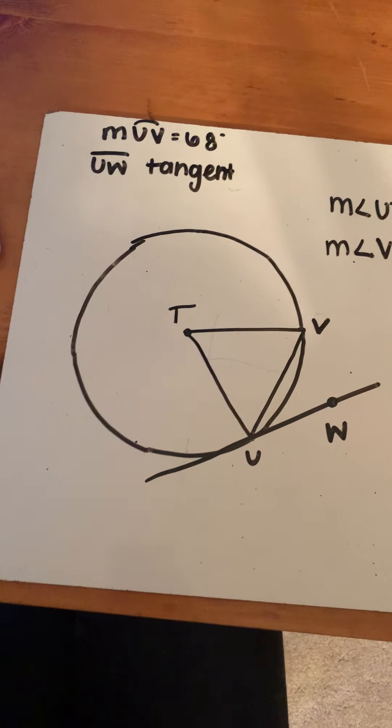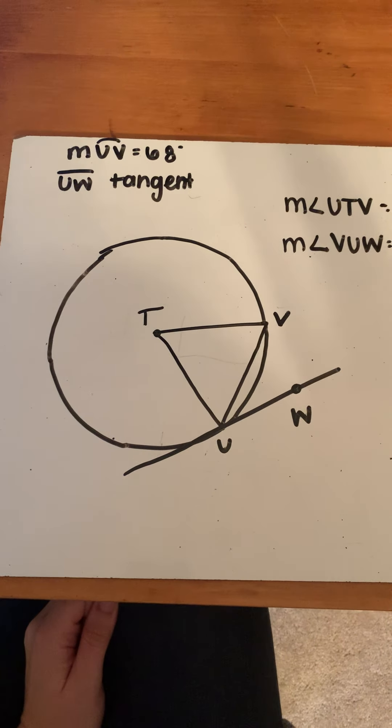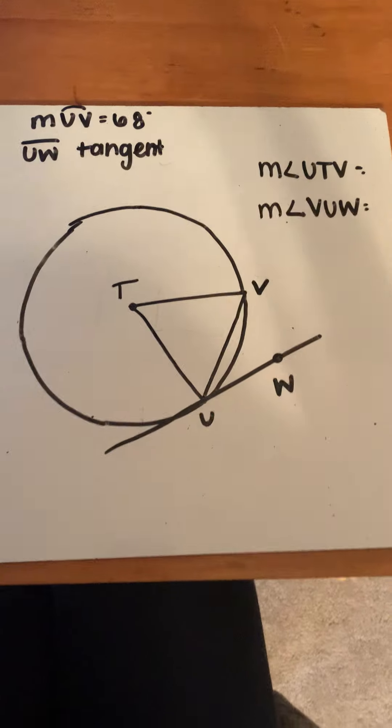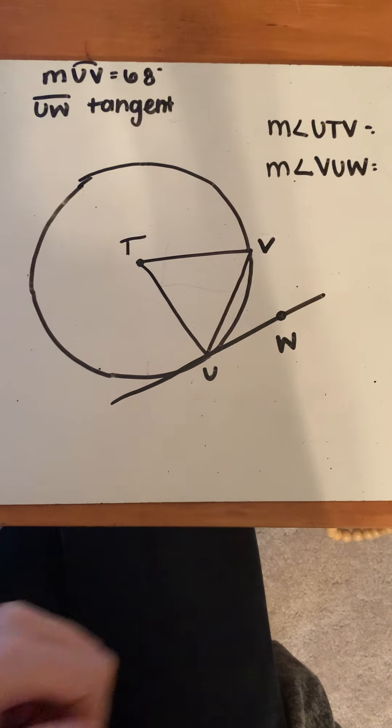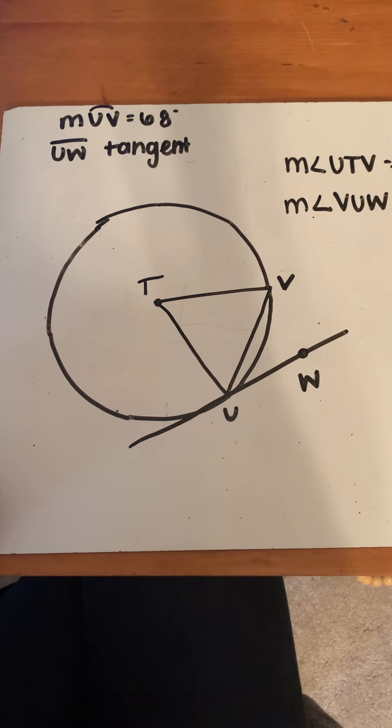I'm going to be doing a video over central angles and angles involving chords and tangents of a circle. This is very similar to the first lesson with inscribed angles and central angles. We're still working with central angles here, and we also have the chord tangent angle property as well.